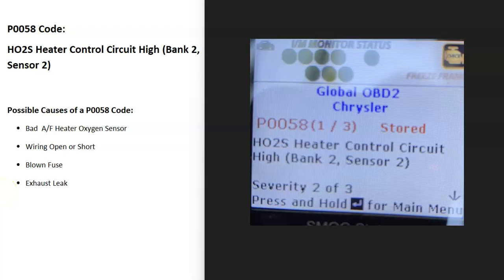Today I'm talking about a P0058 code, what it is, and how to fix it. A P0058 code is an HO2S heater control circuit high, Bank 2, Sensor 2.